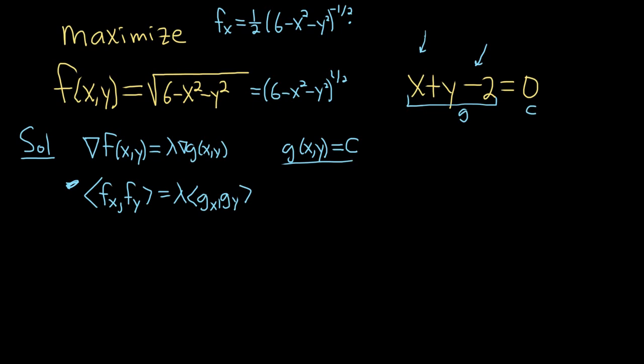So it'll be negative 2x. So now the 2's cancel, and so you just get negative x. And you can bring this bad boy downstairs, turn it back into a positive 1 half, and then turn it into a square root. So 6 minus x squared minus y squared.